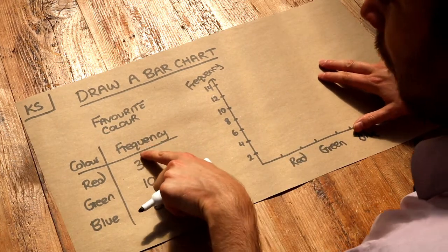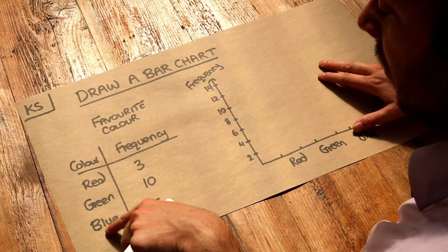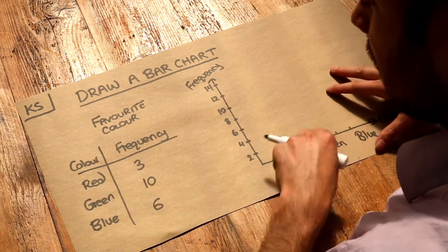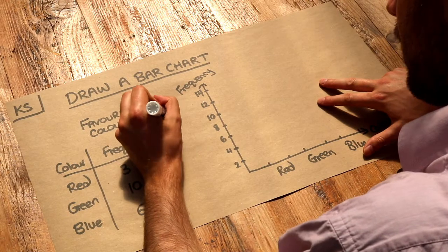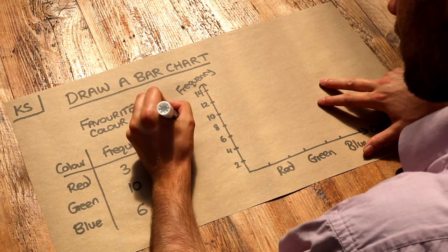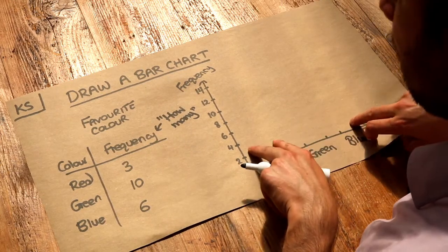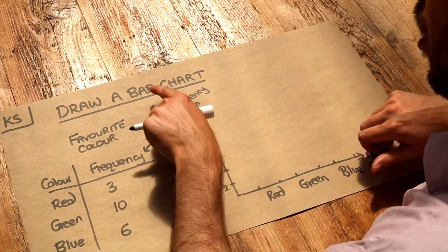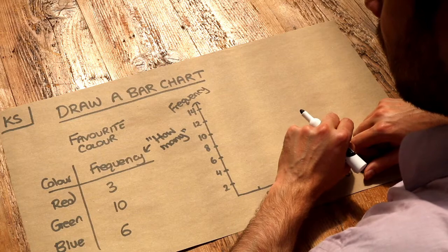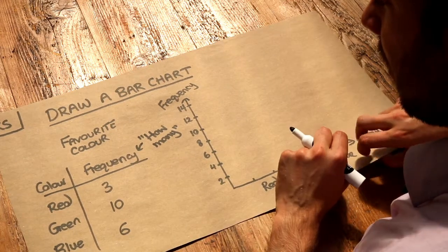So this is telling us how frequent each color was in our survey when we asked people what their favorite color was. So how many people said red, how many people said green, how many people said blue? Basically the height of each bar in our bar chart will tell us this frequency.